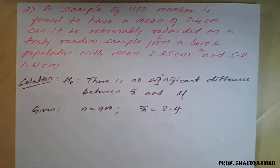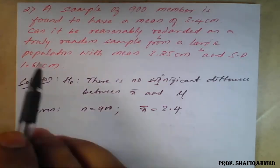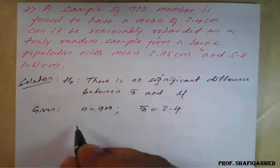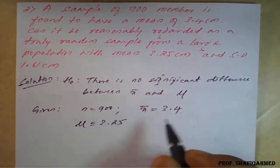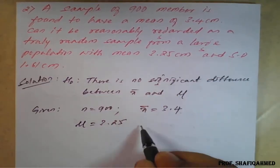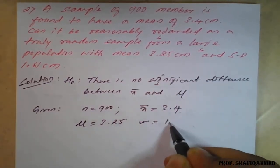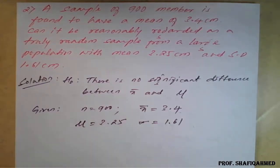Can it be reasonably regarded as truly random sample from a large population with mean, that is μ = 3.25 cm and standard deviation σ = 1.61 cm.